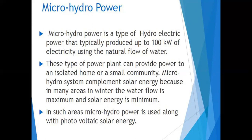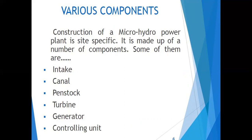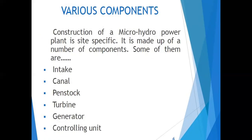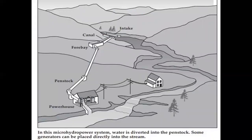The various components — the construction of a micro hydro power plant is site-specific; we cannot construct it everywhere, we need a suitable reservoir. The plant is made up of a number of components: the intake (where water is taken), the canal, the penstock, the turbine, the generator, and the controlling unit.